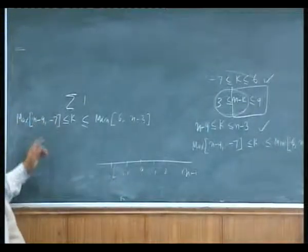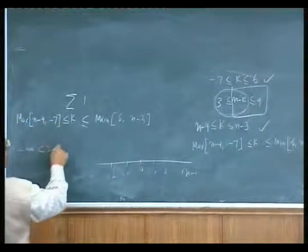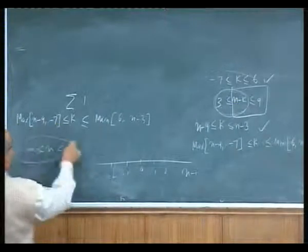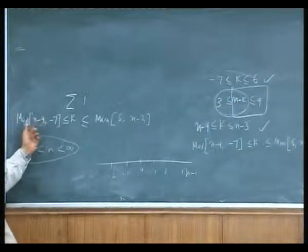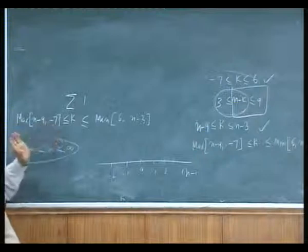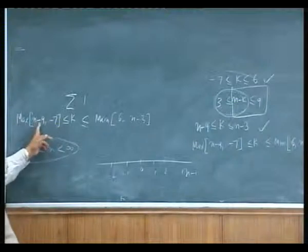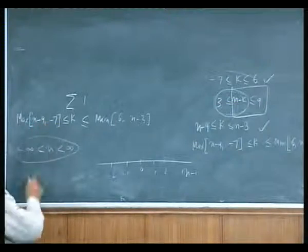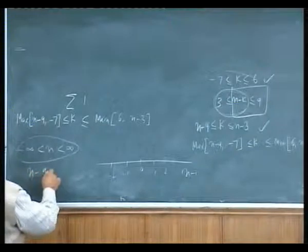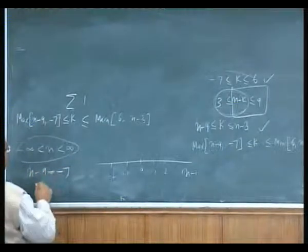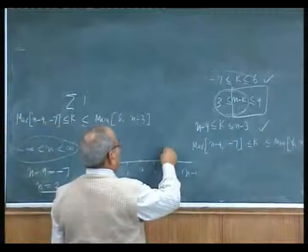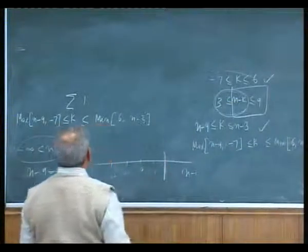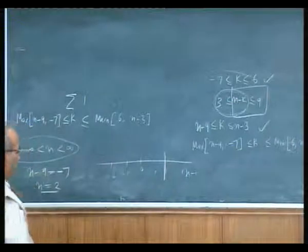Since n is a varying number, n can vary in this range, and as n varies, n minus 9 also varies. Out of the two expressions, either one will be the maximum depending on n. Both will be equal when n minus 9 equals minus 7, that means when n equals 2. So at n equals 2, both these elements become equal.